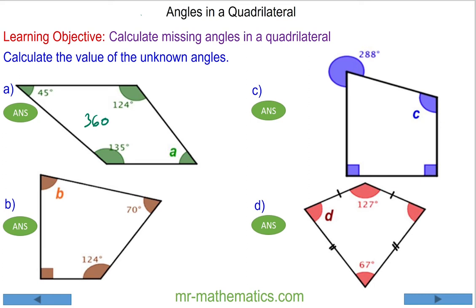For question A, we know 45 plus 124 plus 135 plus angle A will equal 360. We add these three together and we get 304 degrees. So angle A plus 304 will equal 360.